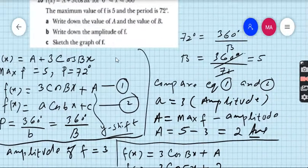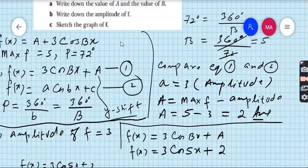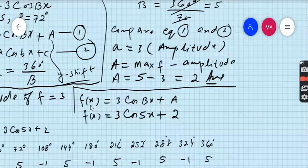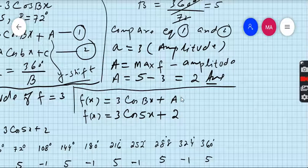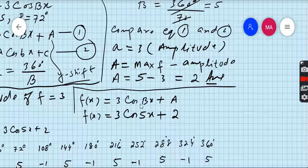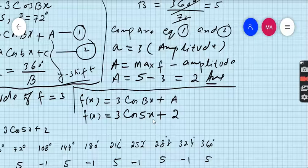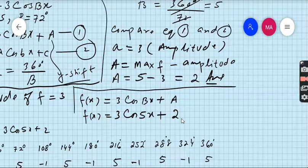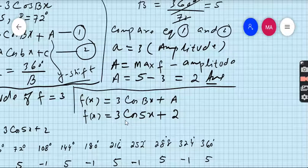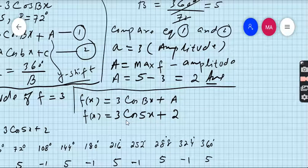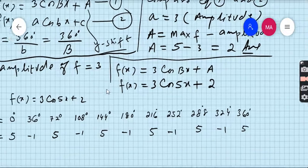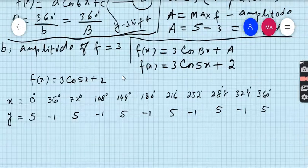What is part C? Sketch the graph of f. Very easy and very important part. First write down the equation which is given in the question: f(x) equals 3cos(Bx) plus A. Now put all those values which we just found. 3cos(5x) plus 2. Therefore the equation becomes f(x) equals 3cos(5x) plus 2. And now we have to draw the graph of this function. In order to draw the graph we must make the table.